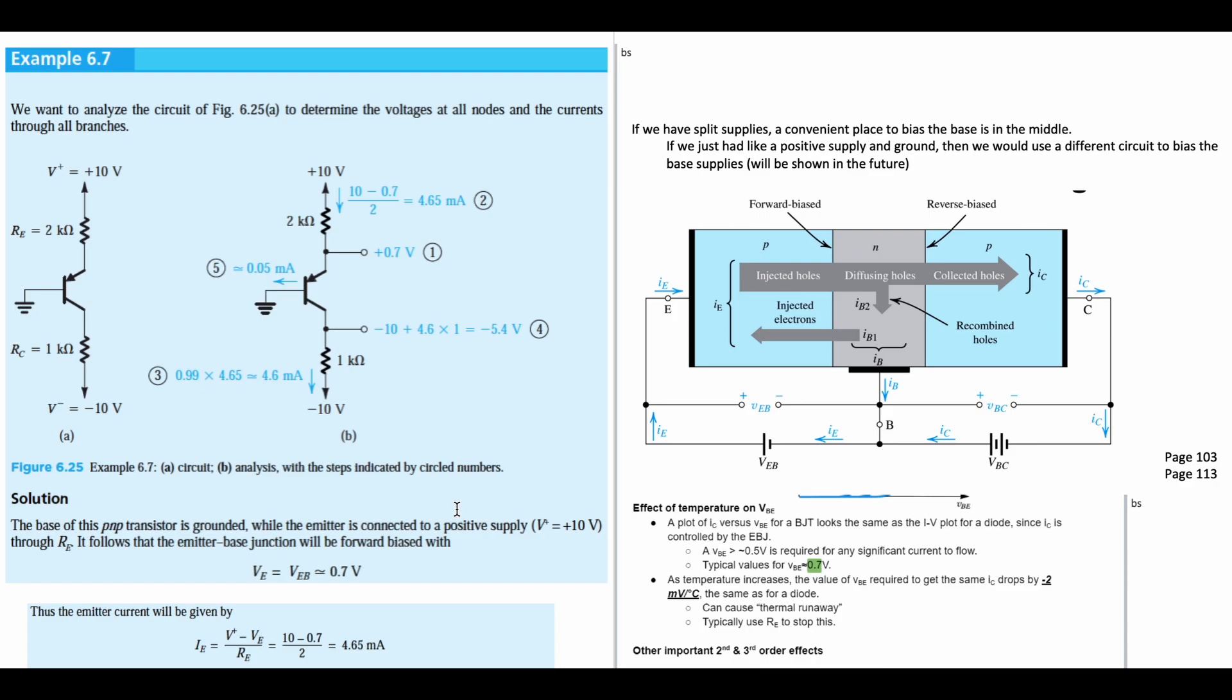We can see here that we have split supplies, meaning we have a plus 10 volts to the top and a minus 10 volts to the bottom of our circuit. That means the bias to the base is in the middle. If we have a positive supply and ground, then we would use a different kind of circuit to bias the base supplies, and this will be shown in the future.